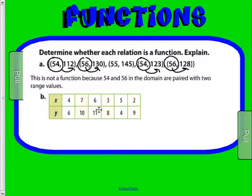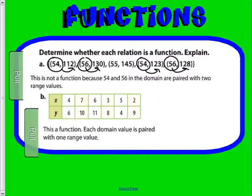All right, even though these numbers are all jumbled, it's okay: 4 to 6, 7 to 10, 6 to 11, 3 to 8, 5 to 4, 2 to 9. If we look at this one, it is a function because each domain is paired with one of the range. The domain is always your x and your range is always your y.